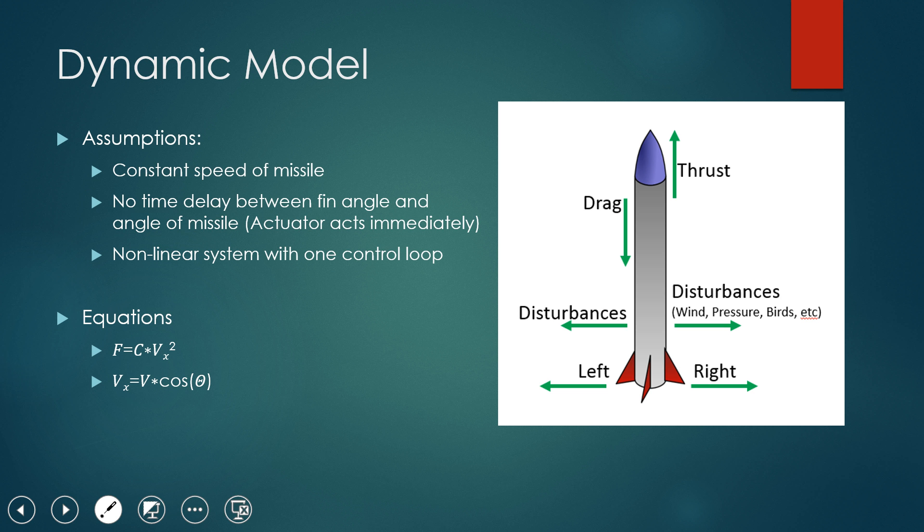So the assumptions that we're making, we're assuming constant speed of the missile. So it's going at a constant 500 miles per hour forward.